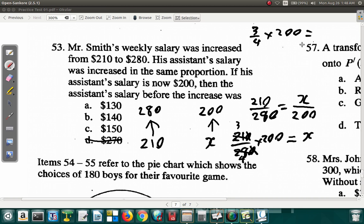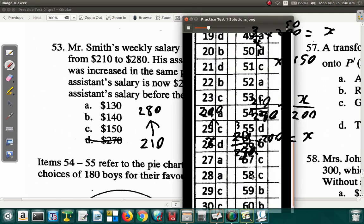By 200, we're just using this space here. 4 into 200: 4 into 25 is 1, 0, 3, 5, 15. So X is 150. That's what I got here. Question 53 is C.